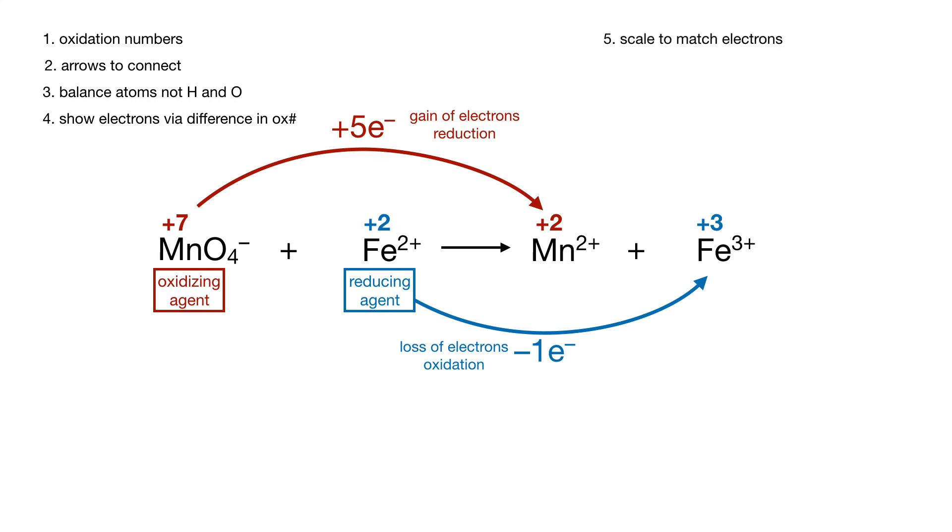We're pretty much all done, except that we need to scale each so that the number of electrons match. So what we're going to do is make that one electron jump up to 5 by doing it 5 times. I'm going to put a 5 in front of both irons.